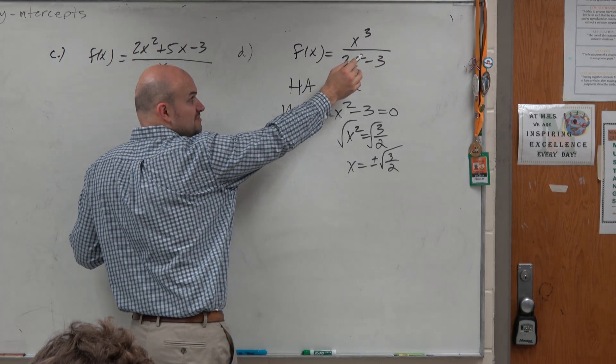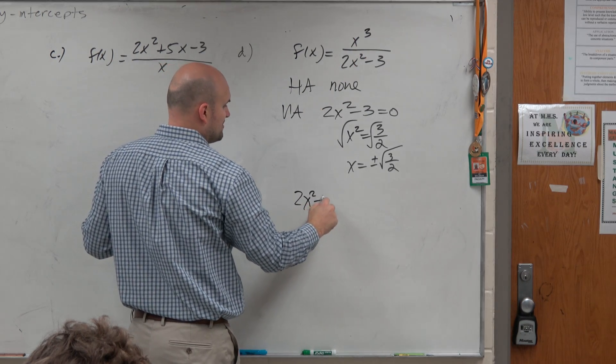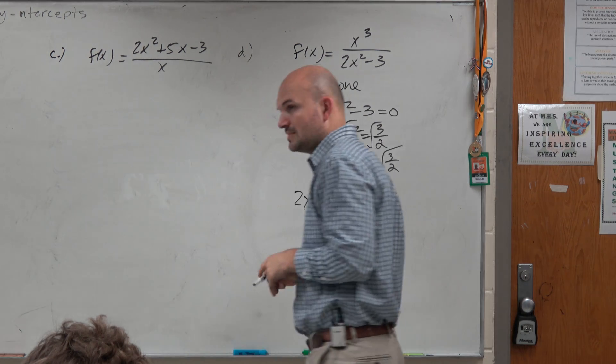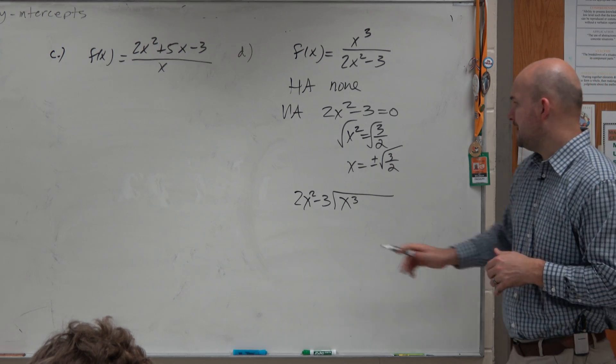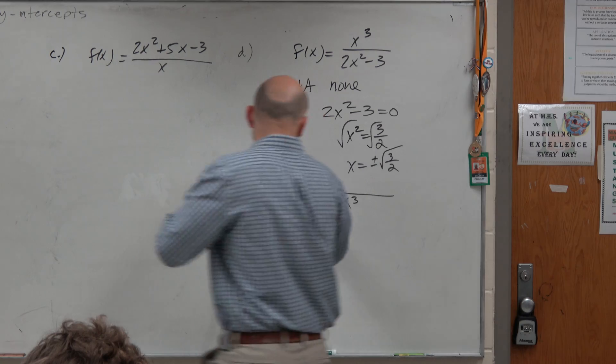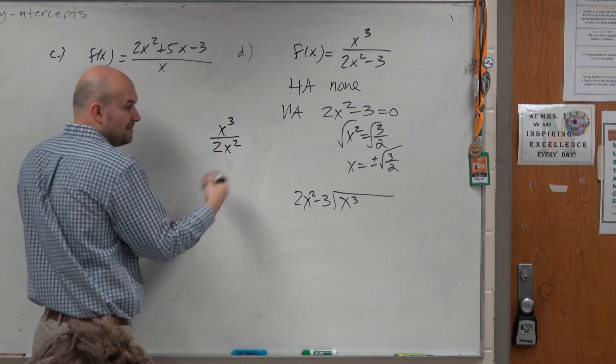Because since this has a smaller power, it divides into that polynomial. So I'll have 2x squared minus 3 divides into x cubed. So 2x squared goes into, how many times does 2x cubed go into x cubed? Well, why don't we write it out over here?